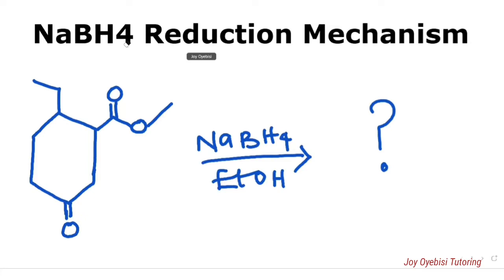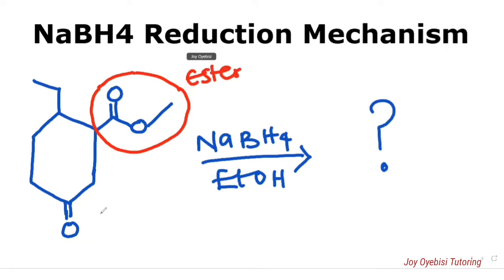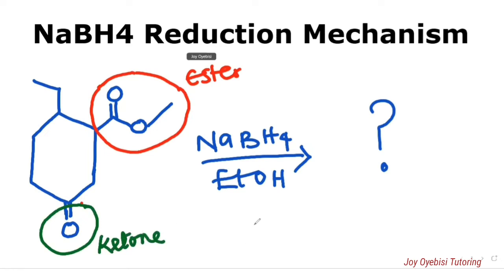So for this particular compound, the functional groups present that have carbonyl groups are two. We have this — this here is an ester. And we have this — this is a ketone. So now we know that sodium borohydride cannot reduce an ester. Therefore, we're going to concentrate more on the ketone part.